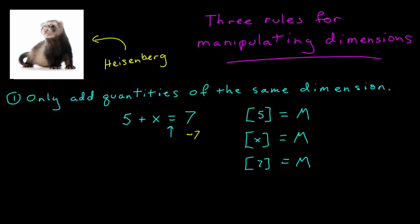If I subtract 7 from each side, I get 5 plus X minus 7 equals 0. So each term here has to have the same dimension.